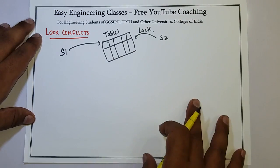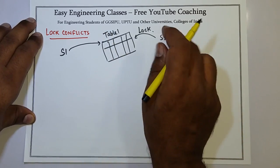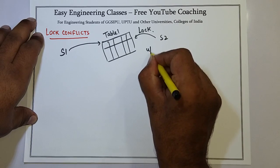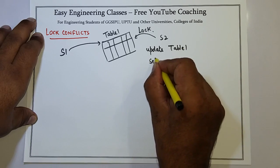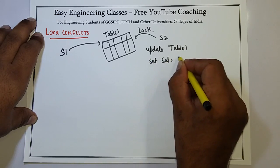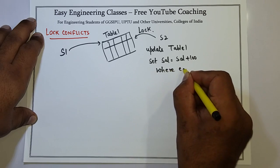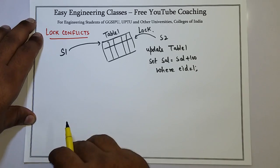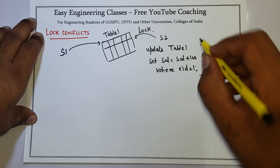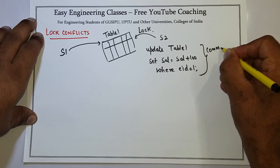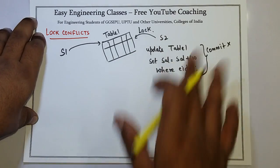Now the example can be, a very basic example: suppose S2 is accessing this table and it fires a query. So let's see, update table 1, set salary equals to salary plus 100 where employee id equals 1, and it forgot to commit the transaction. So commit has not been executed. Since commit has not been executed, the lock is not released.